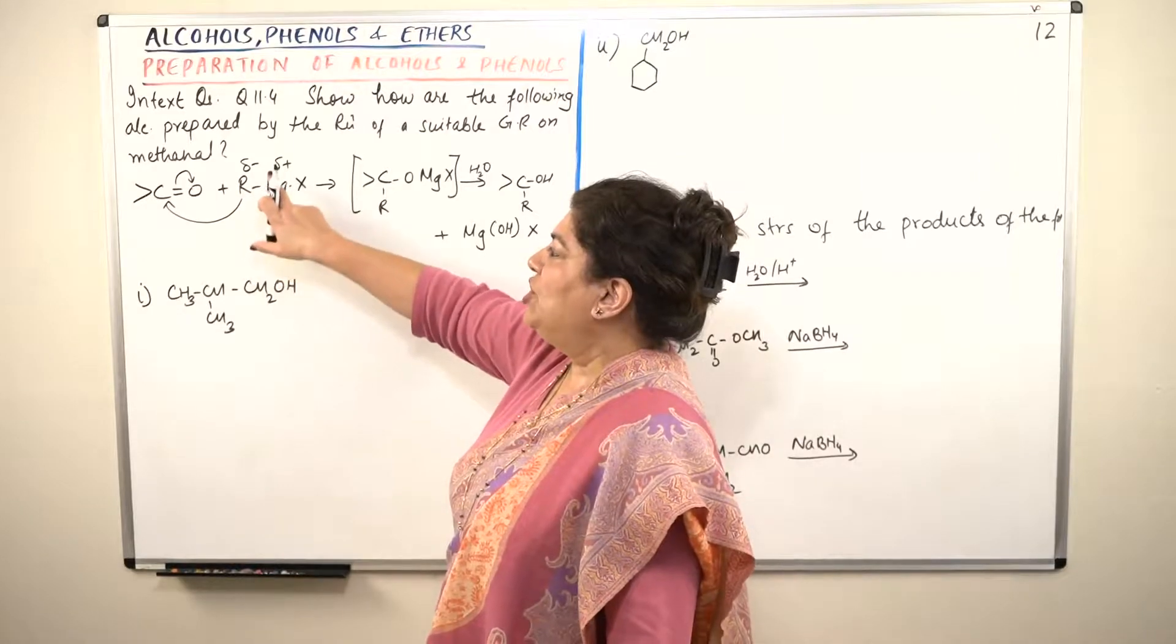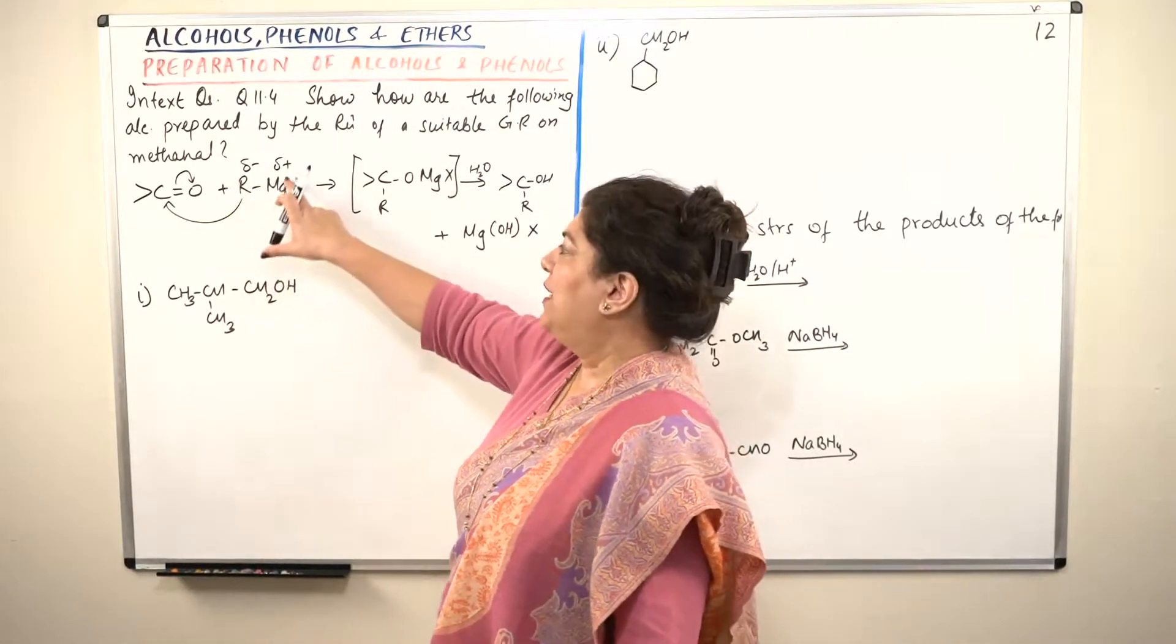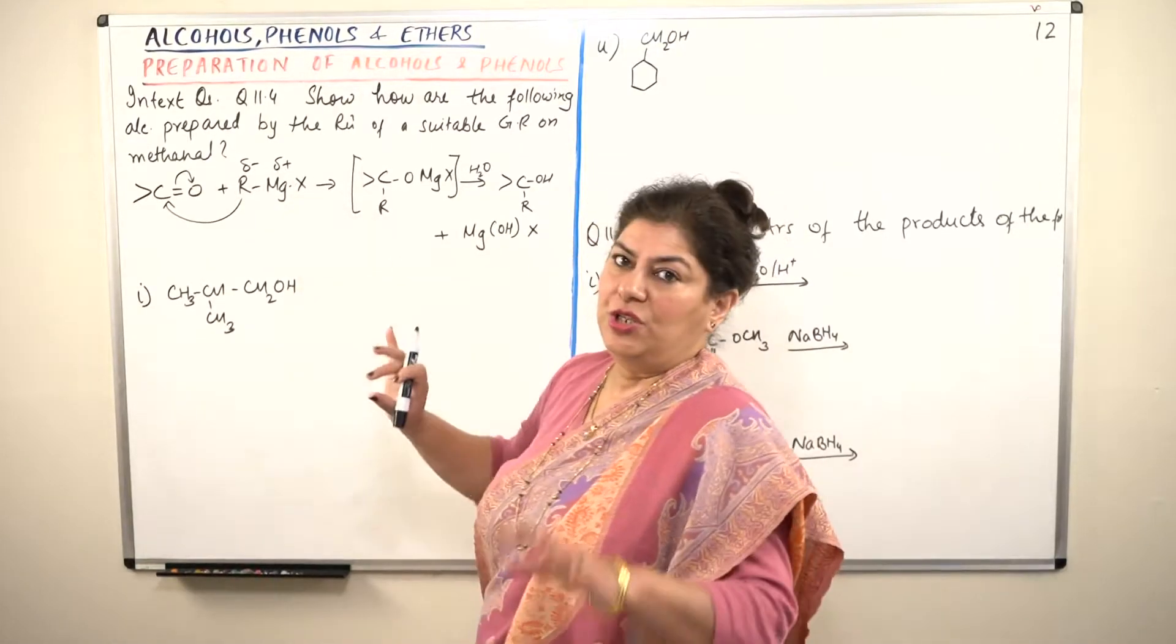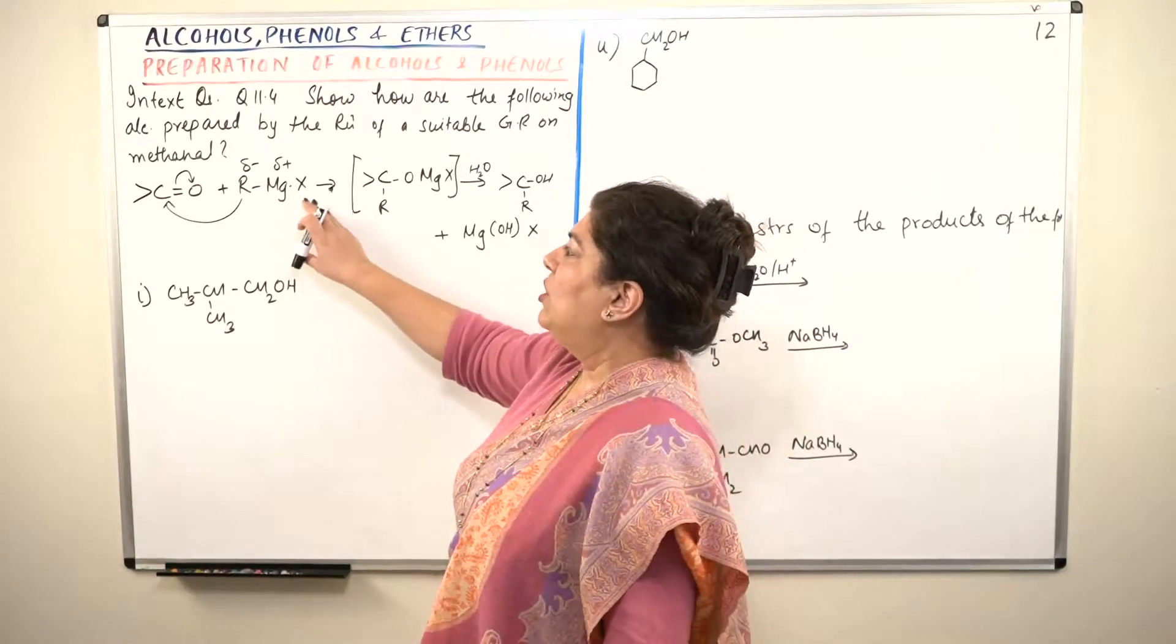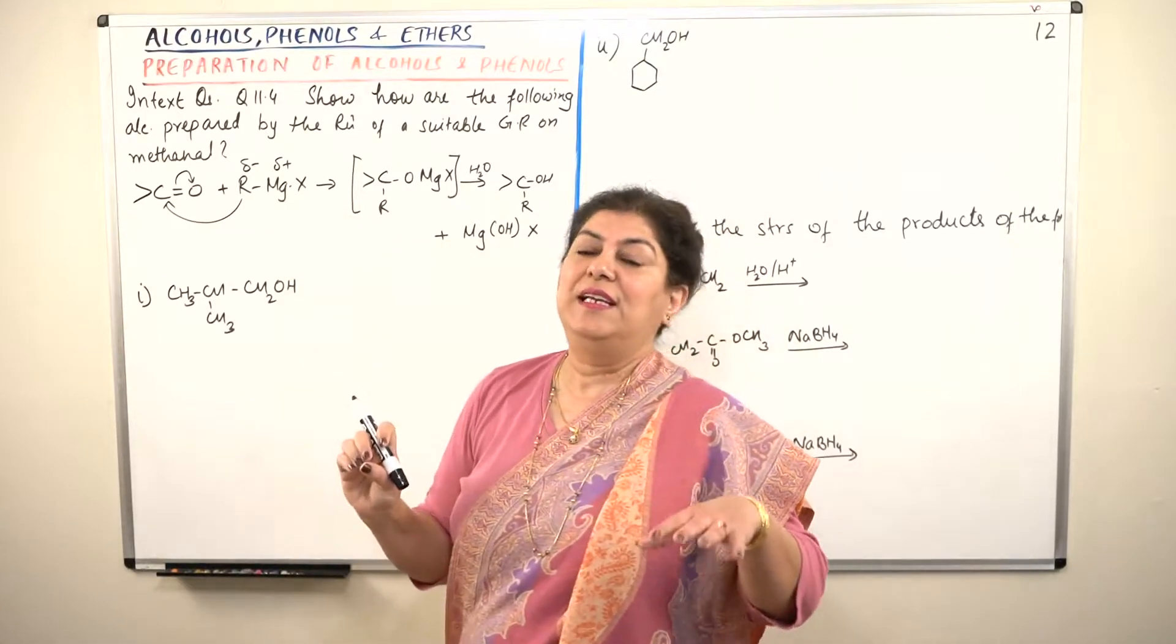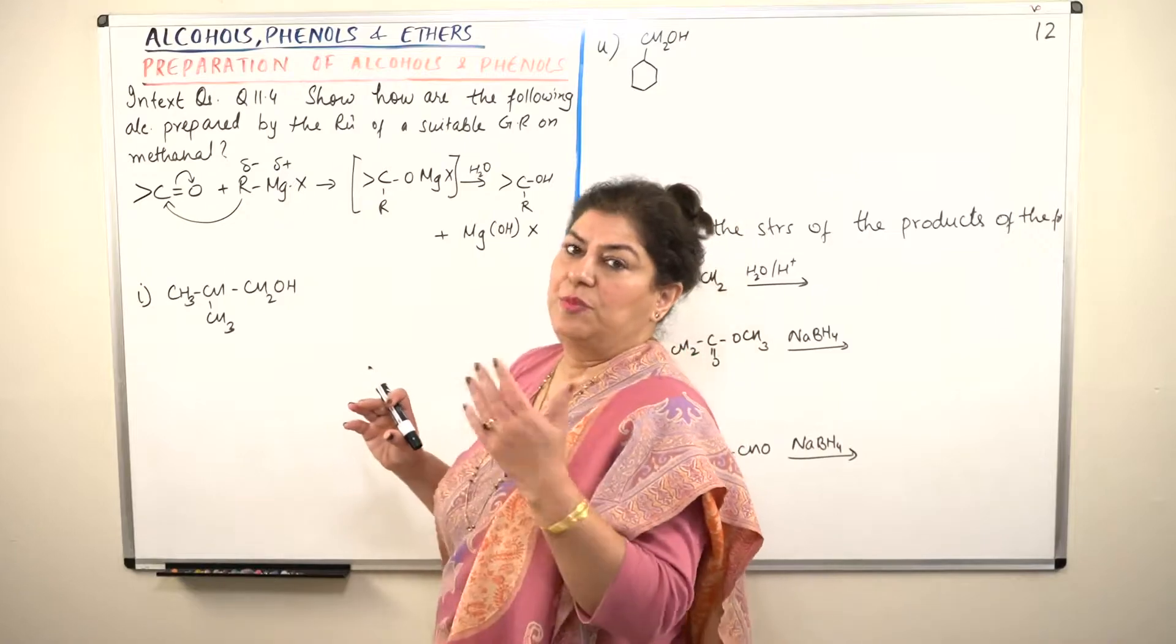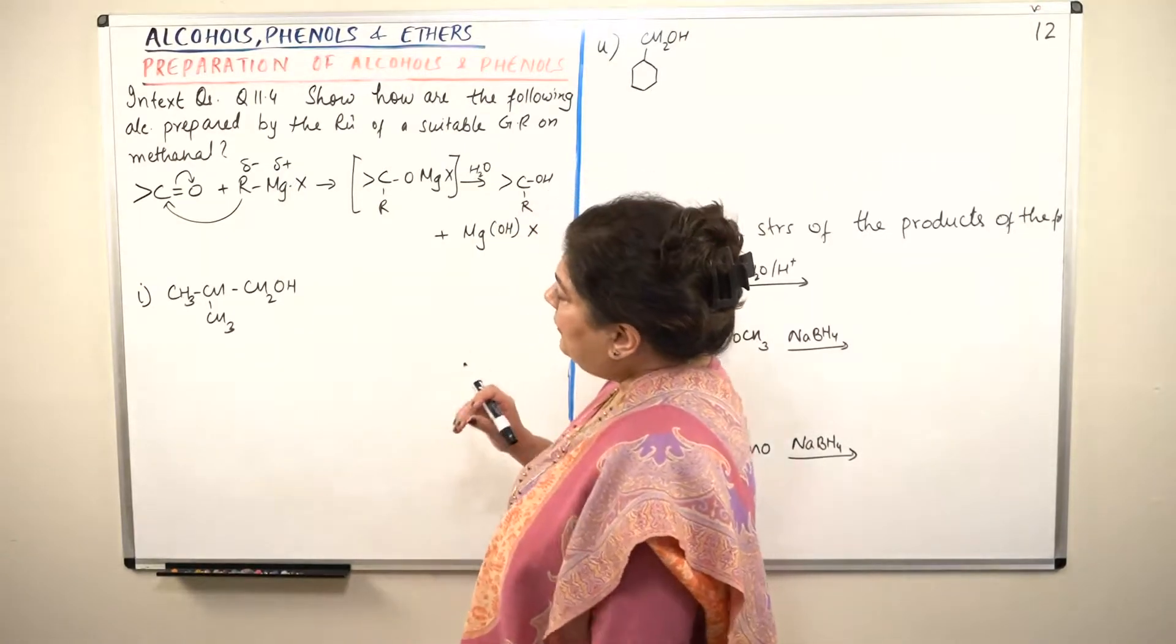R-Mg-X of the Grignard reagent. The Mg-X part, this R is the negative part and the Mg, magnesium is the positive part and this is an ionic bond, a properly ionic bond, therefore the halogen is definitely Br or Cl negative, whichever it is, whether it is Br negative or Cl negative.